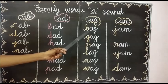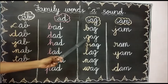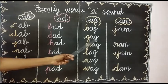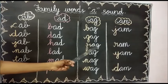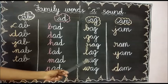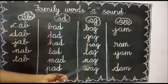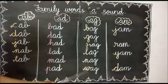Now we are going to see the AG family. First one: bag. B-ag, bag. Next one: gag. G-ag, gag. What is the next one? Rag. R-ag, rag. Next one: lag. L-ag, lag. Next one: nag. N-ag, nag. Next one: wag. W-ag, wag.